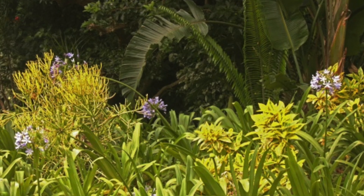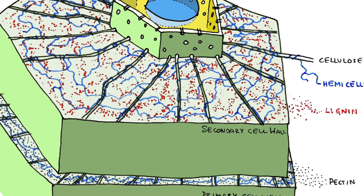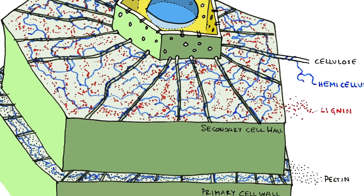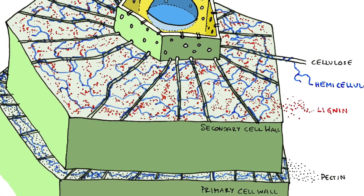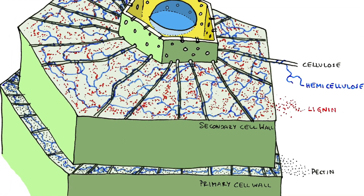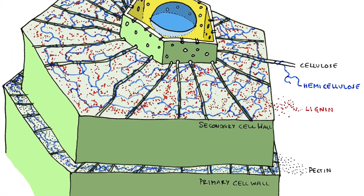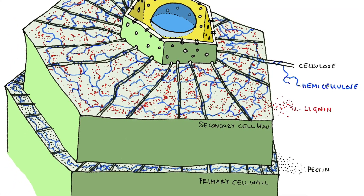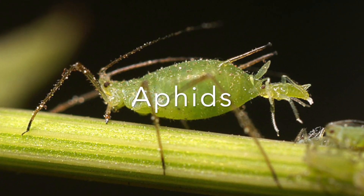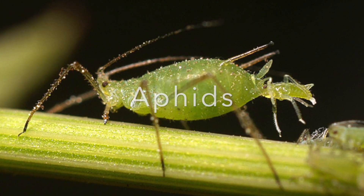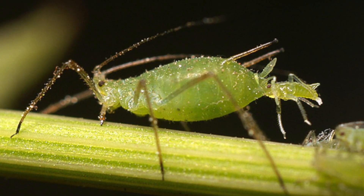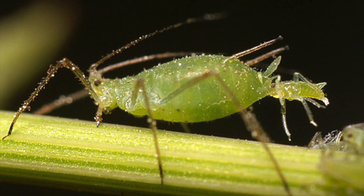First of all, we have cellulose cell walls that strengthen plant cells and can help to resist invasion by pathogens. This is why small insects called aphids are so damaging to plants, as they are able to pierce the cellulose wall and therefore give pathogens a way into the cell.